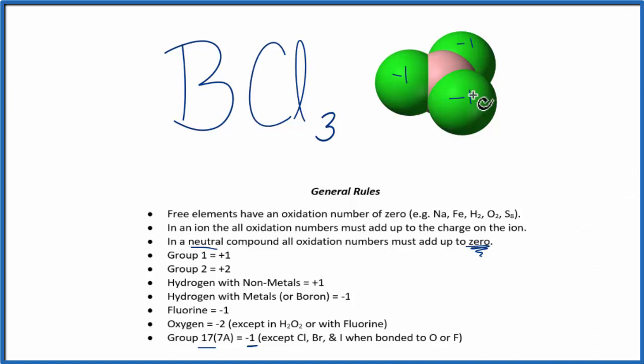So if we have minus 1, minus 2, minus 3, plus some number, and that number will be the oxidation number for the boron, that should equal the zero here. So minus 3 and a plus 3, that equals zero.